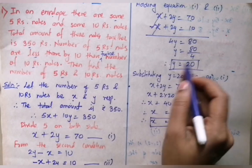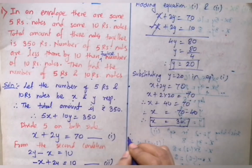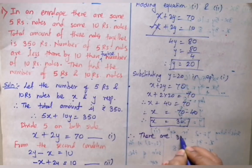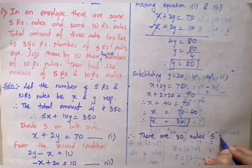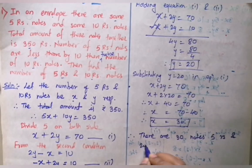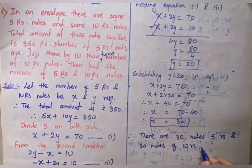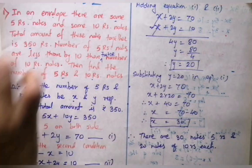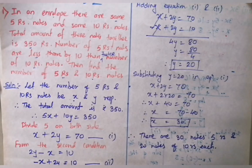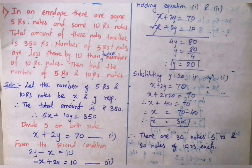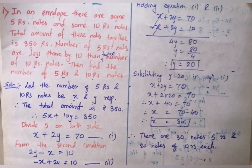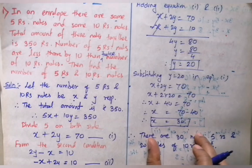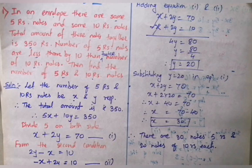Therefore there are 30 notes of ₹5 and 20 notes of ₹10. So in this way we solved practice set 5.2 question number 1. Always remember: first derive the equations from the word problem, then use addition or subtraction to eliminate a variable, and substitute to find the other value.